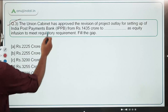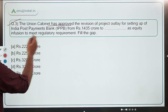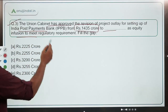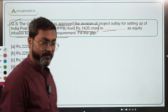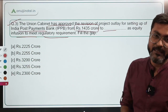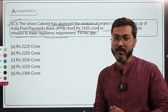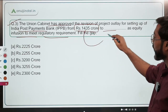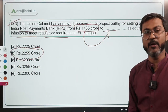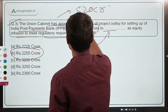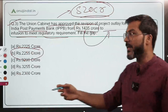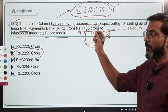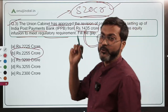Question 3: The Union Cabinet has approved the revision of the project outlay for setting up India Post Payment Bank — the only government-owned payment bank — from rupees 1435 crore to rupees 2255 crore, which includes additional equity infusion to meet regulatory requirements. The total outlay is now 2255 crore.